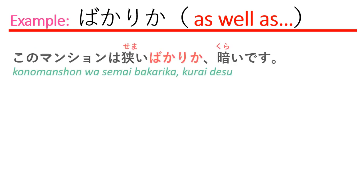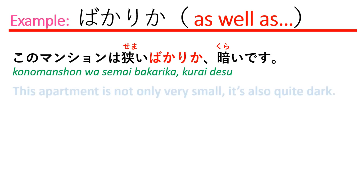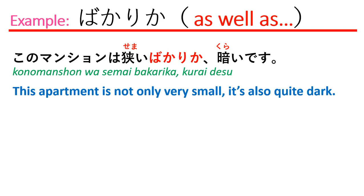The first example: このマンションは狭いばかりか、暗いです。 Which means: this apartment is not only very small, it's also quite dark. Here we use ばかりか to explain the situation — 狭い means small (not big), and it's also dark, so we use ばかりか to connect these two negatives.